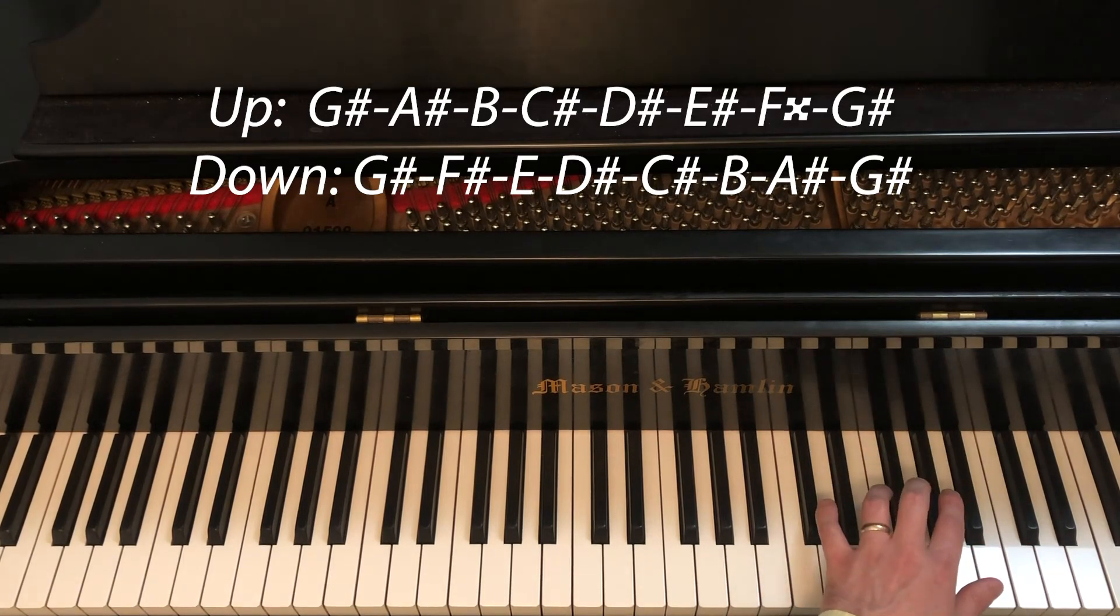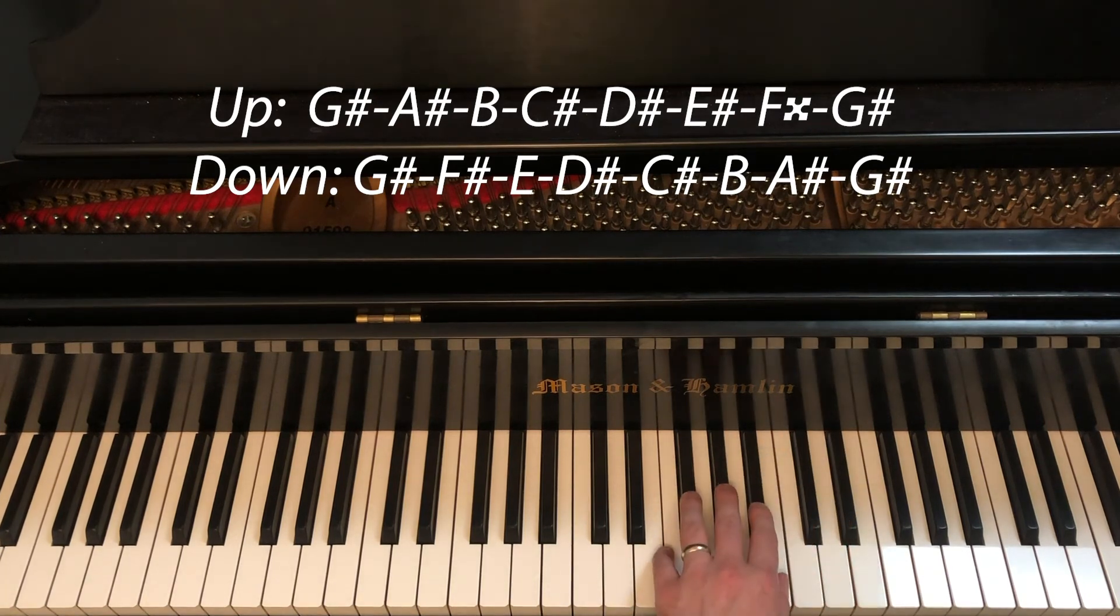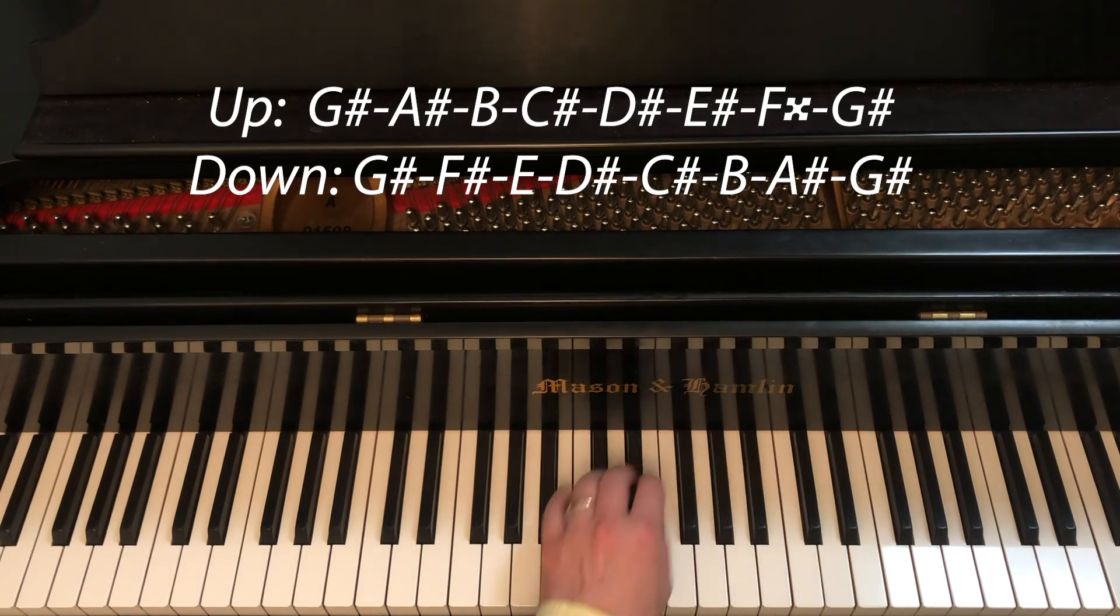Coming down, we are 2-3 on G-sharp, F-sharp. And then thumb on E. 1-2-3. Thumb on B. 1-2-3-4. Thumb on E.